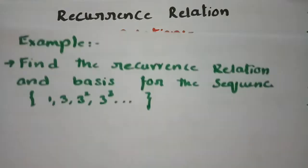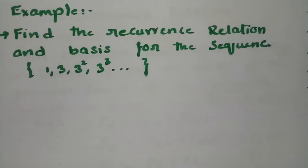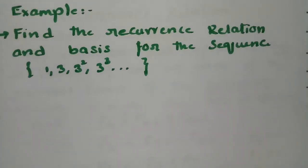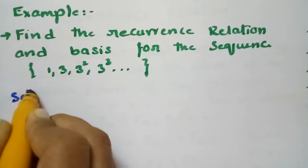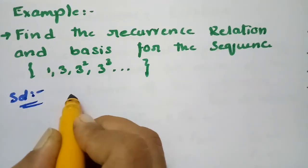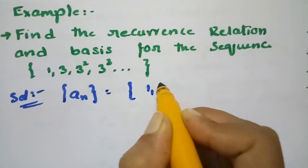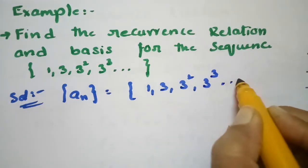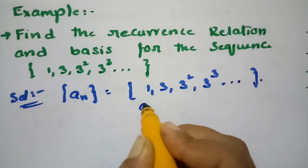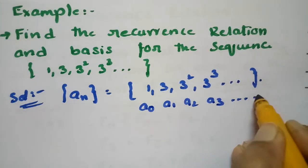The next example: find the recurrence relation and basis for the sequence 1, 3, 3², 3³, and so on. According to the Aₙ sequence, this is expressed as 1, 3, 3², 3³, ..., corresponding to A0, A1, A2, A3, and so on.